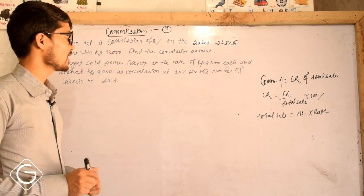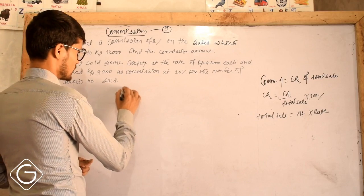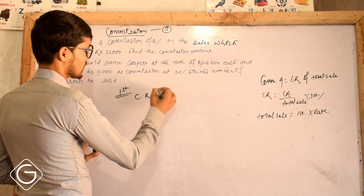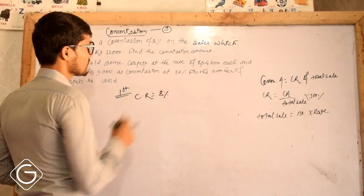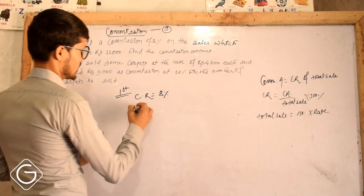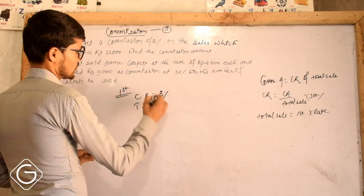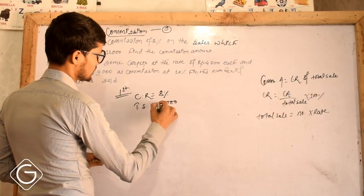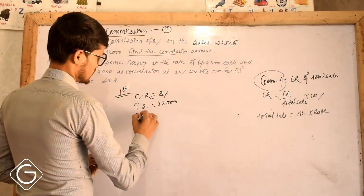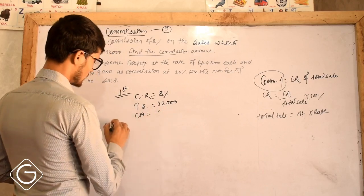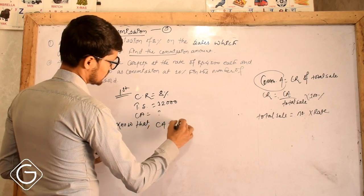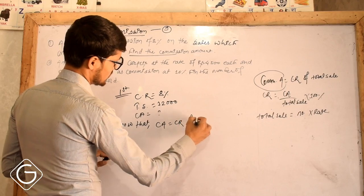A man gets a commission of 8%. So first question: commission rate CR is 8% on the total sale, which amounts to 12,000. So total sale TS is equal to 12,000. Then find the commission amount. Commission amount formula — we know that: